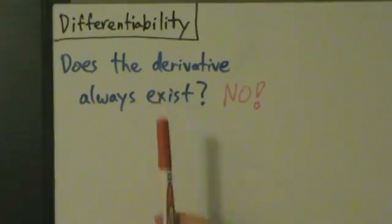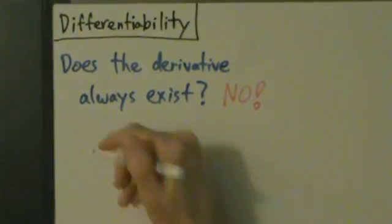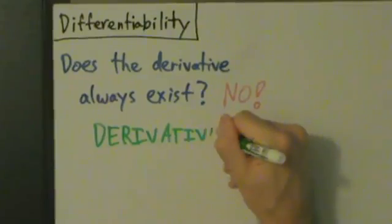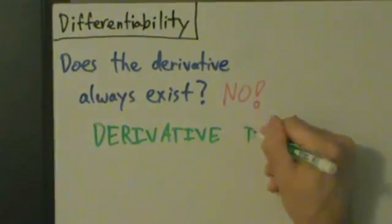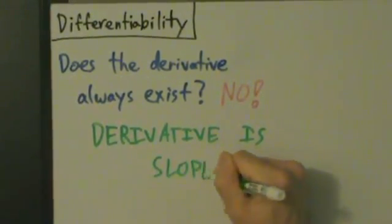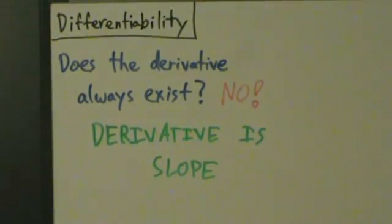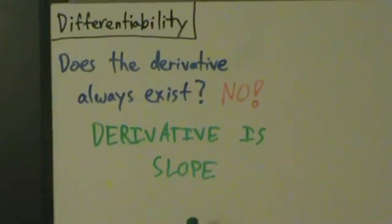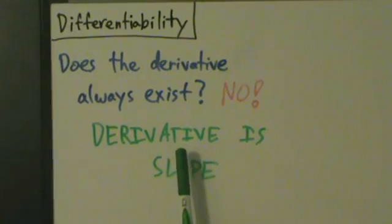Why might the derivative not exist? Remember, what is the derivative? It's just slope. Specifically, it's the slope of the curve or the slope of the tangent line. So if the derivative and slope are pretty much the same thing, can you think of any time when a slope doesn't exist? Think about vertical lines — they have undefined slope. So if you have a curve that has a vertical tangent line somewhere, then the derivative at that point is going to be undefined.